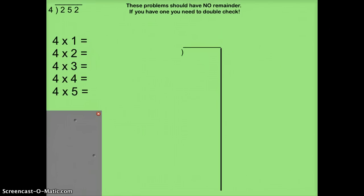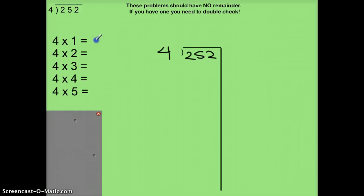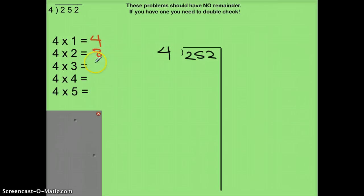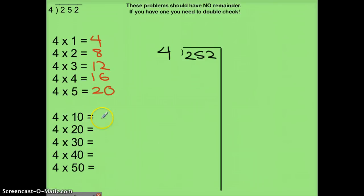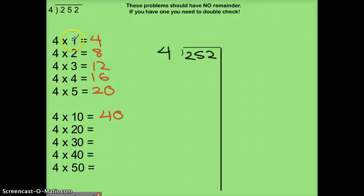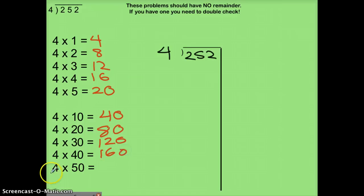The next problem — read this, everybody. 252 divided by 4. Let me set it up: 252 divided by 4. I'm going to start writing facts for the 4 times table. 4 times 1 is 4. Times 2? 8. Times 3? 12. Times 4? 16. Times 5? 20. Do any of these products get me close to this dividend? No. Let's add some: 4 times 10 is 40 — we just added a zero. 4 times 20 is 80. 4 times 30 is 120. 4 times 40 is 160. And 4 times 50 is 200.